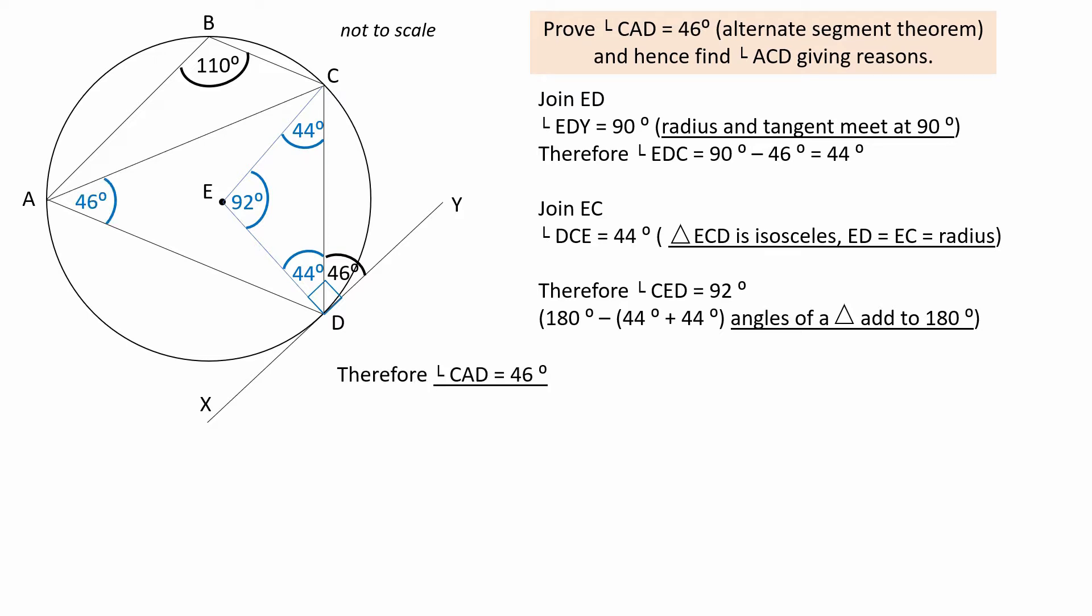Therefore, angle CAD equals 46 degrees. 92 degrees divided by 2. Calculated using the circle theorem rule, the angle at the circumference is half the angle at the centre when subtended by the same chord. This completes the proof. Angle CAD equals 46 degrees.